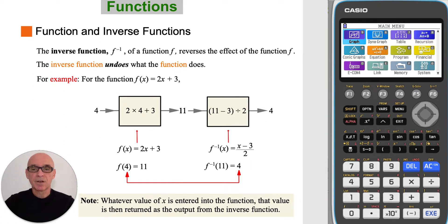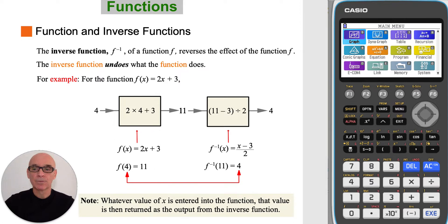The inverse function, denoted f to the minus 1, of a function f, reverses the effect of the function f. So the inverse function undoes what the function did. In the example shown, the function f maps 4 to 11, and the inverse function f to the minus 1 maps 11 back to 4. We write f of 4 is equal to 11, and inverse f of 11 equals 4.